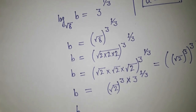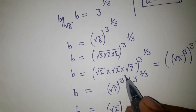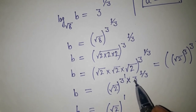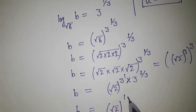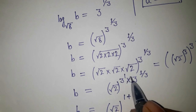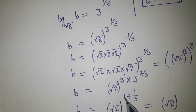And we have B equal to root 2, this is power 1. Now bases are same, so powers will be added together: 1 plus 1 by 3. Here base is same and powers are going to add, so it will become root 2 to the power 3 plus 1 over 3, which is 4 by 3.